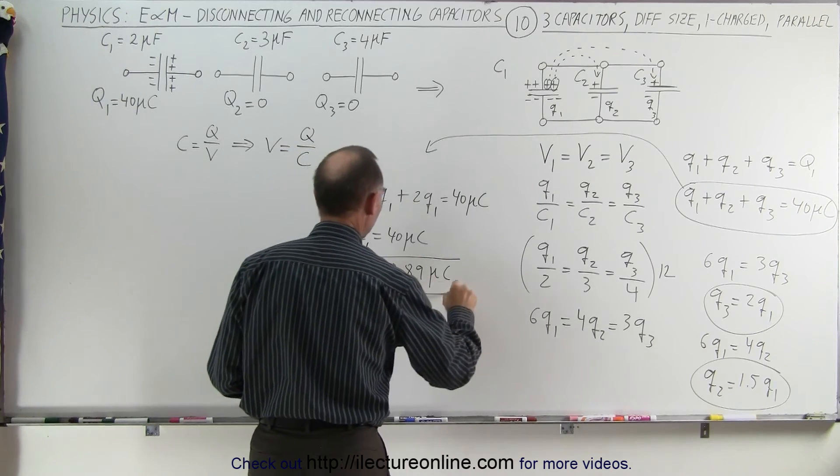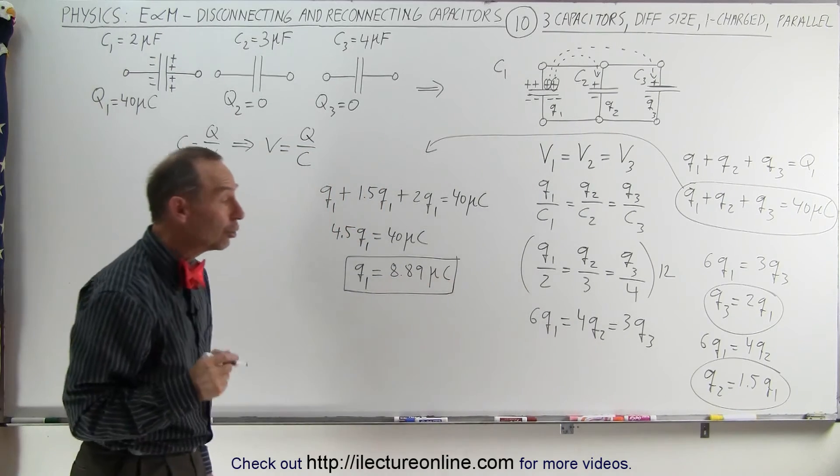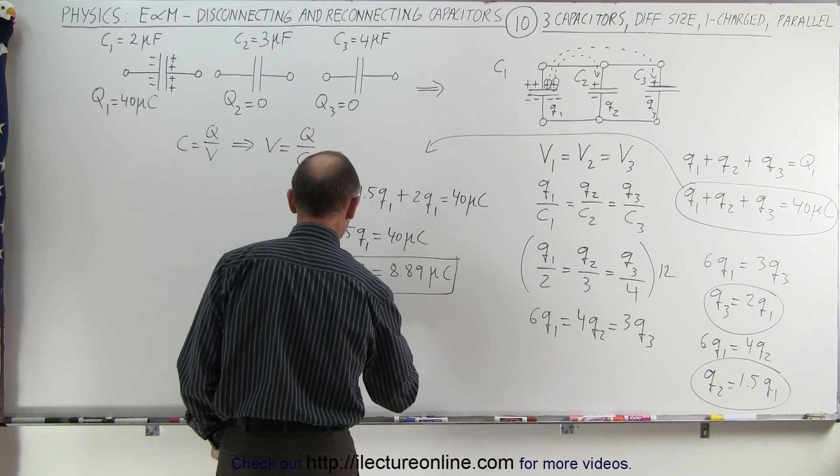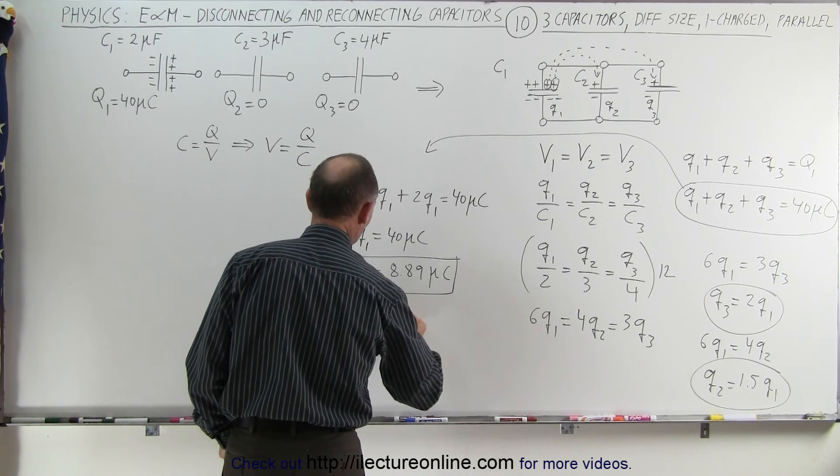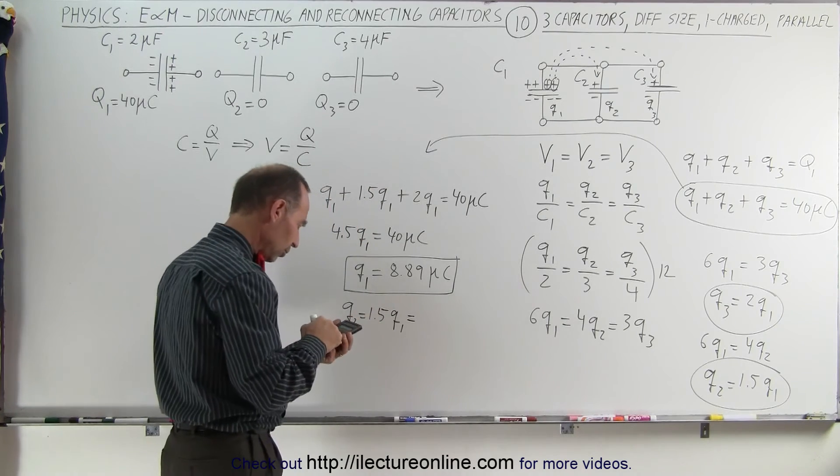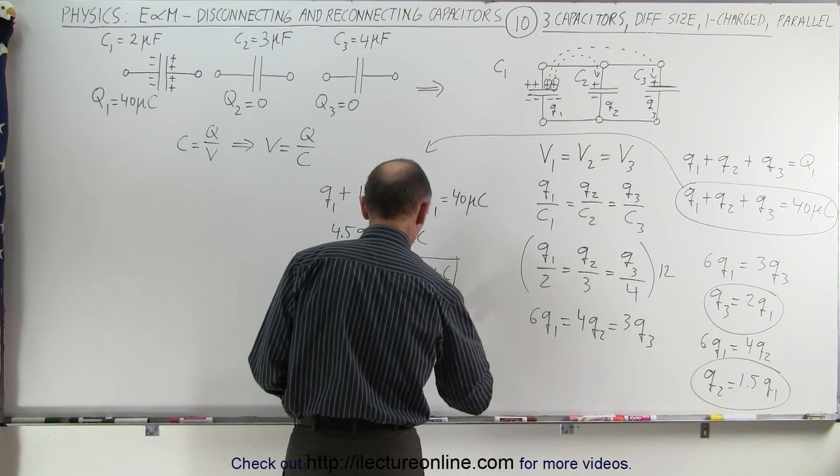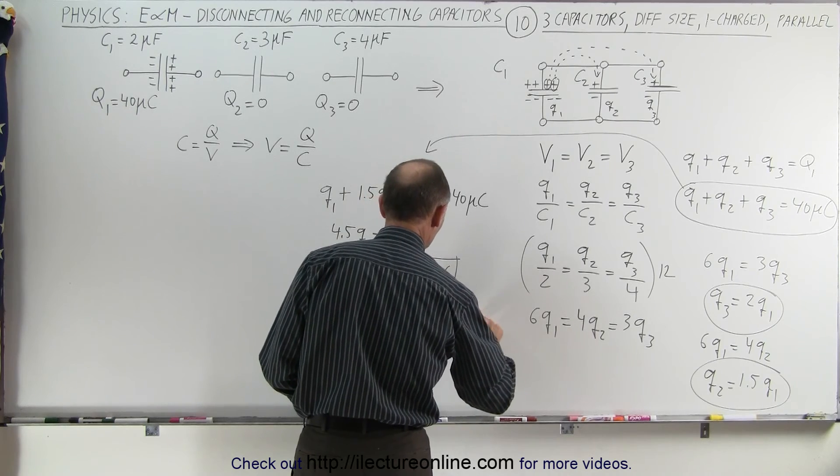And there's my first result. Now finding q2 which is simply one and a half times that much, so q2 which is 1.5q1 equals 1.5 times 8.89 equals 13.33 microcoulombs.